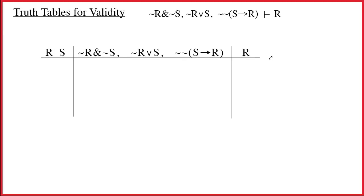We take the information we're going to analyze and put it across the top of the table. I like to separate the premises and the conclusion with a solid line. Up the front, we put the guide columns — just a list of all the sentence letters that show up in the argument. There are only two here: R and S.